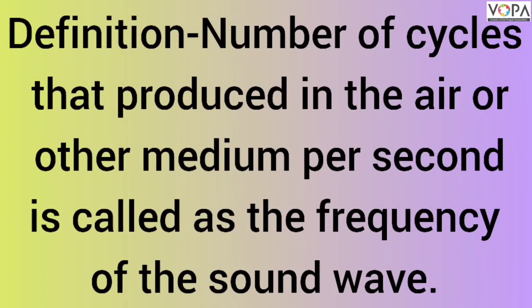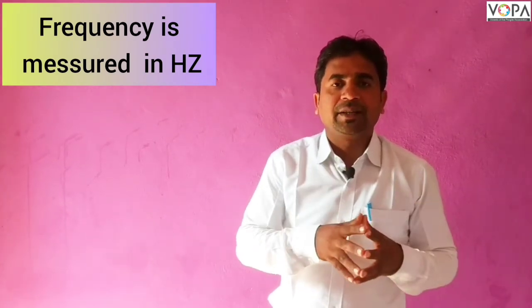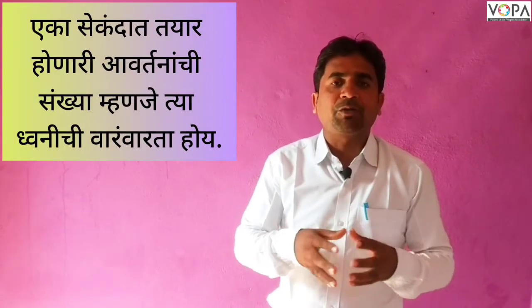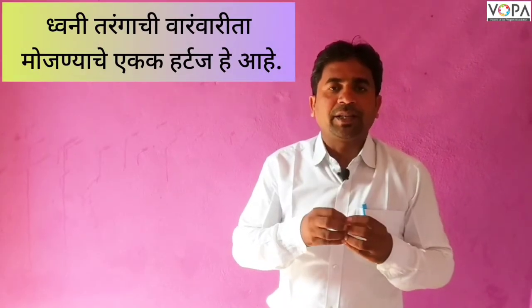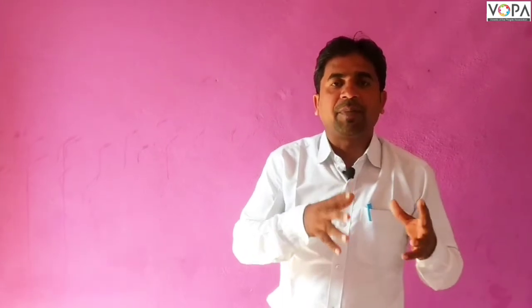The number of such cycles produced in air or another medium per second is called the frequency of that sound. Frequency is measured in the unit Hertz. If one cycle is completed in one second, then its frequency is one Hertz.